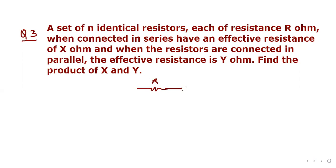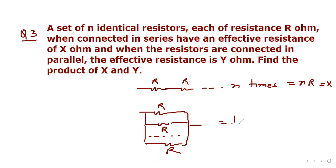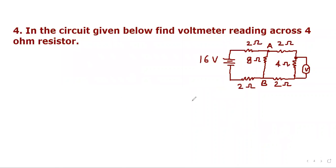So R ohm, R ohm, N times will give NR which is X. Then R and R and R, n resistors connected in parallel. So 1 upon Rp equal to 1 upon R plus 1 upon R, n times. So this will give n upon R, so Rp will be, here Rp is Y, so Y equal to R upon n. Now we have to find out XY. So X is nR and Y is R upon n, so from where we will get XY equal to R square.